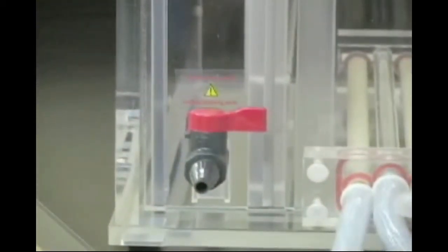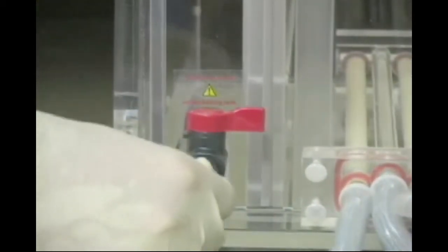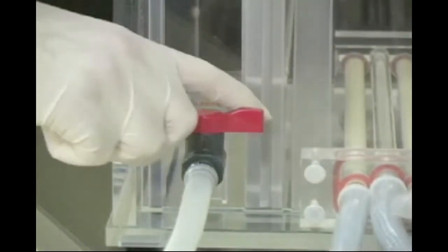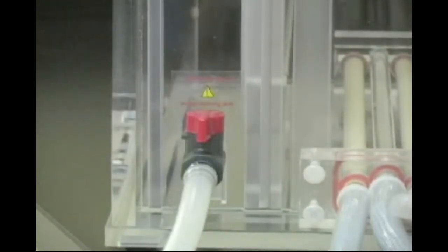The Protean Plus DodecaCell has a drain port that allows quick and easy drainage of buffer. Simply attach the provided extension tubing to the drain port and place a receiving vessel below the cell to catch the buffer. Open the valve when you are ready to drain the buffer.